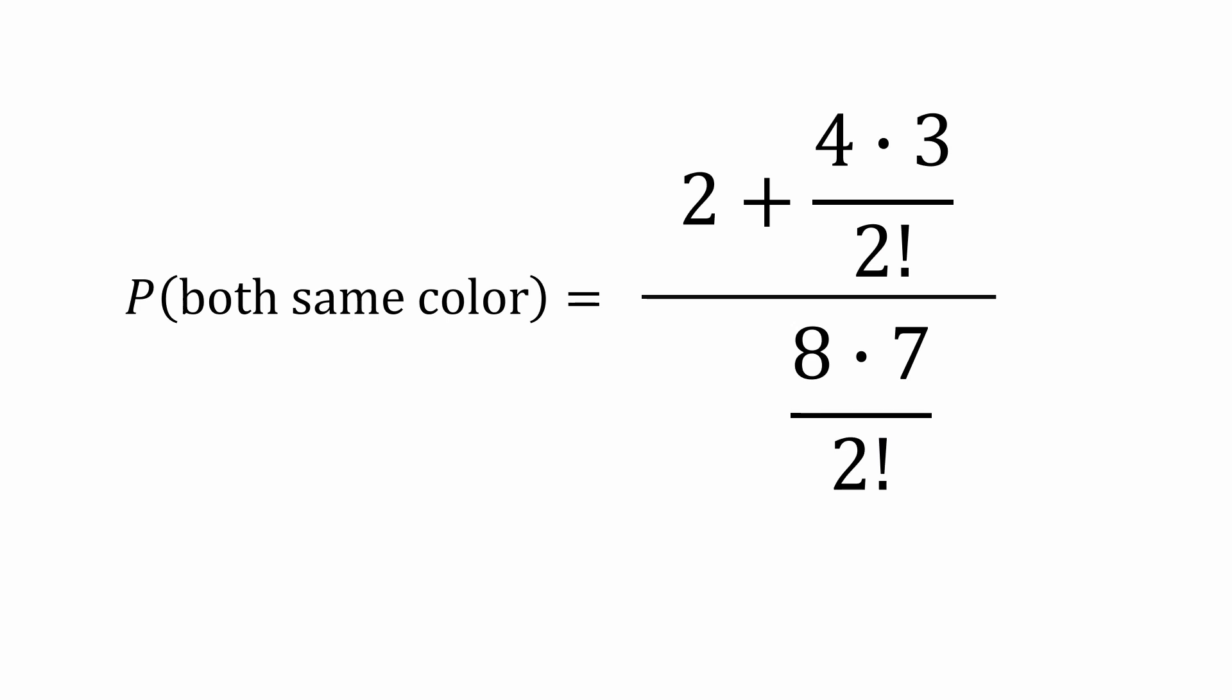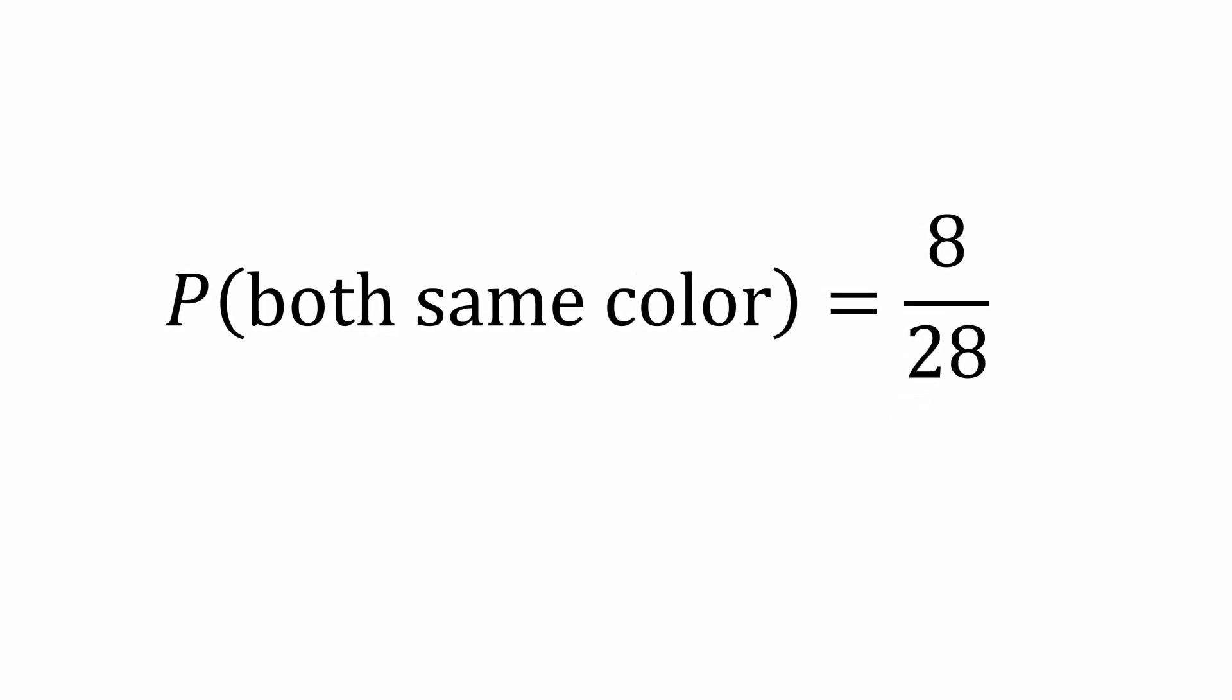Simplifying a bit more, the numerator becomes 2 plus 6, which is 8, and the denominator becomes 28. 8 over 28 reduces to 2 over 7.